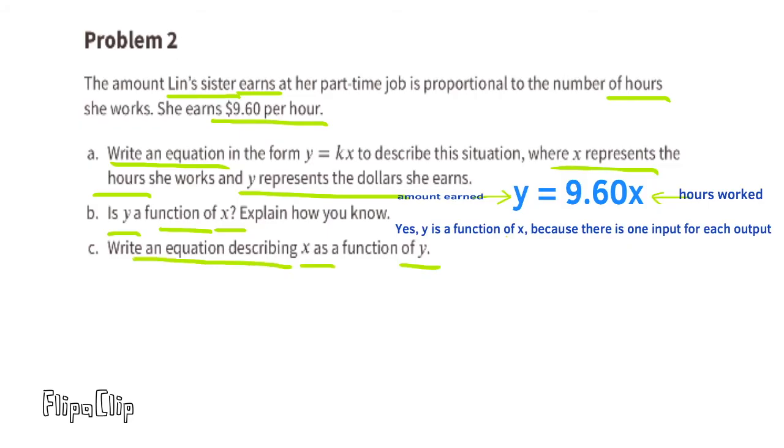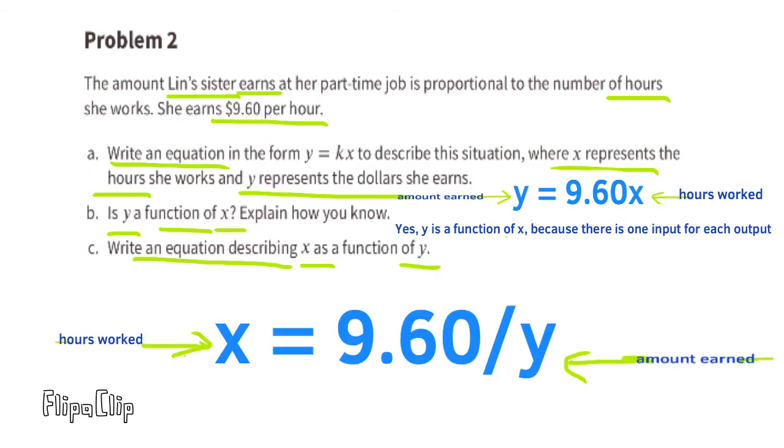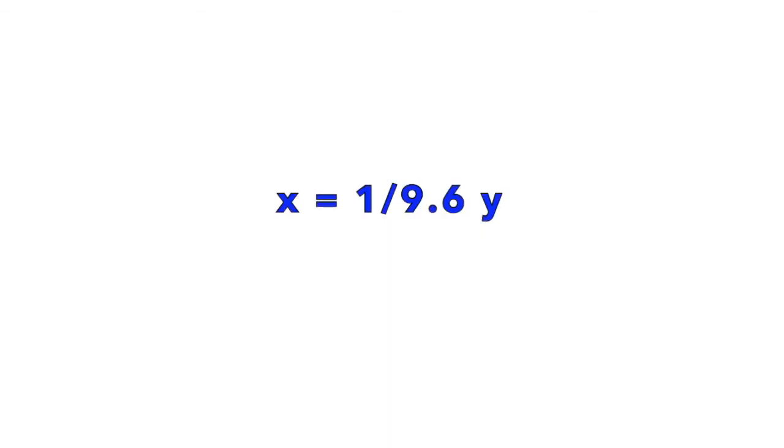C. Write an equation describing X as a function of Y. One equation would be X equals 9.60 over Y. Another equation could be X equals 1 over 9.60 times Y.